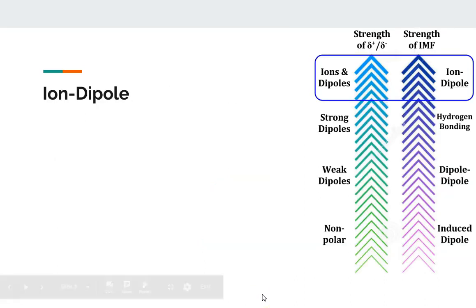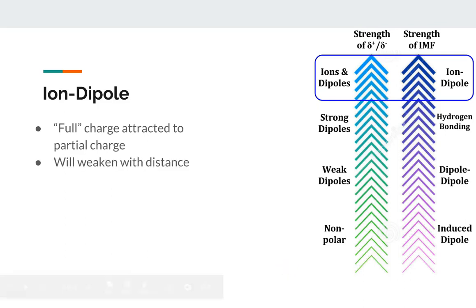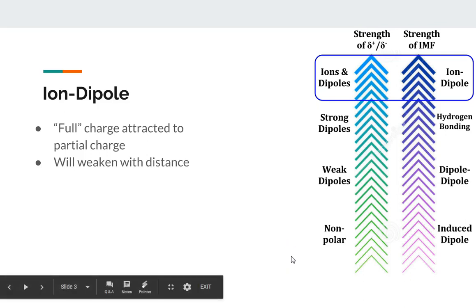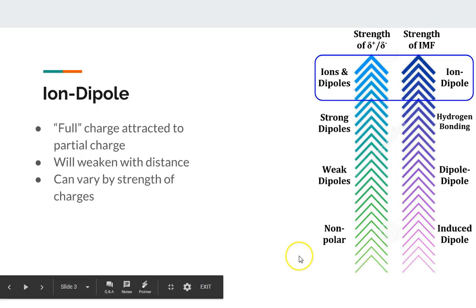Let's start with the strongest IMF: ion-dipole. This is when we have an ion attracted to a polar molecule. Polar molecules are referred to as dipoles because they have two poles — a partial positive and a partial negative. Just like in an ionic structure, they're going to weaken with distance. The closer those particles can get to each other, the more strongly they're attracted. The size of the molecule affects this — a huge particle like iodine attracts differently than a small ion like hydrogen. They can also vary by strength of charge, consistent with Coulomb's Law.